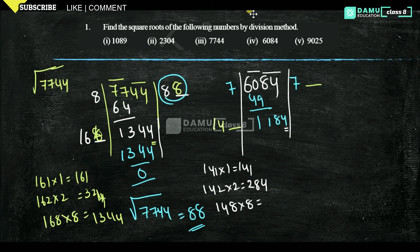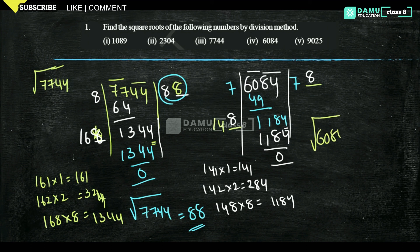For that, 8 times 8 is 64, so 148 into 8, you will get 1184. Here definitely 8. How you can get 8? The last number I'm checking here gives 64. 1184 will become 0. Then square root of 6084 equals 78. The quotient is 78. Thanks for watching, please subscribe.